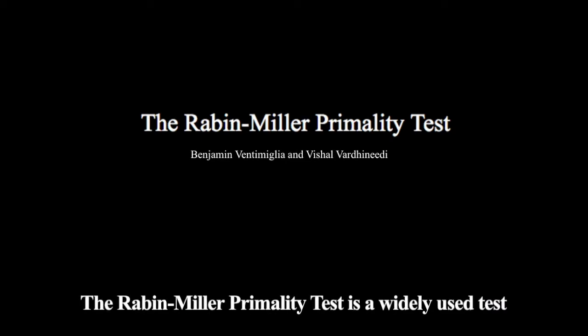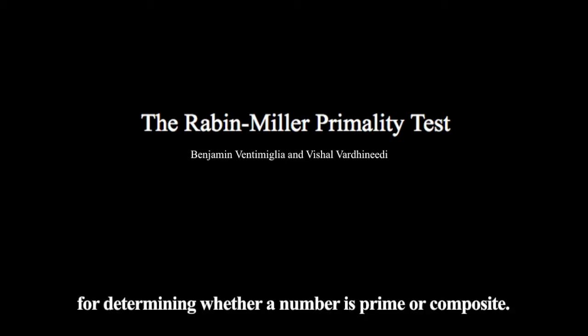The Rabin-Miller Primality Test is a widely used test for determining whether a number is prime or composite. This video will go over the history of the test, the concepts that allow it to function, and some examples.